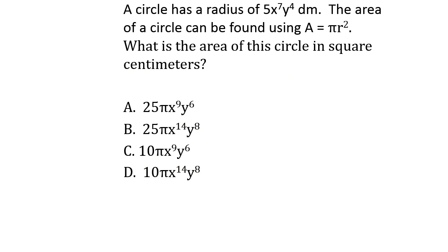Our second question tells us we have a circle with a radius of 5x to the seventh y to the fourth decimeters. We know the area of a circle can be found using the formula area equals pi r squared, and it wants us to find the area in square decimeters.